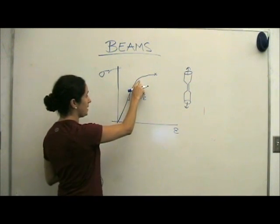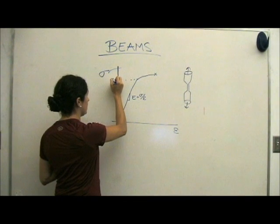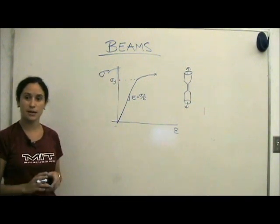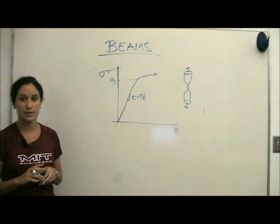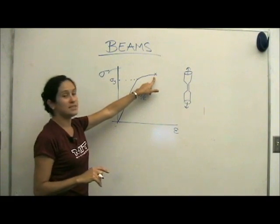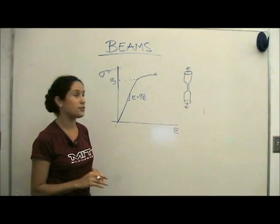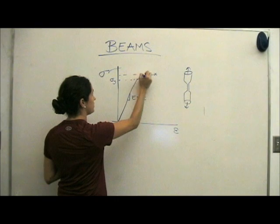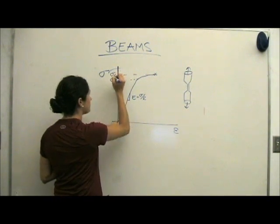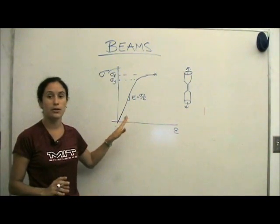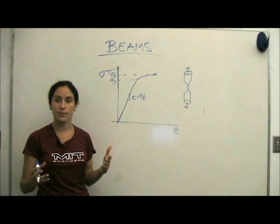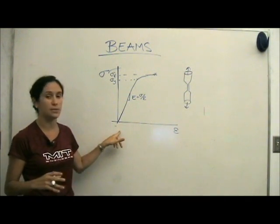When we see this bend, this is actually the yield stress of the material. It's the point at which the material stops behaving elastically and starts behaving plastically. This end point is usually the fracture strength or the maximum strength of the material. This is a typical graph for a common material such as steel or aluminum. Most metals behave in this way.